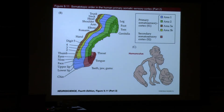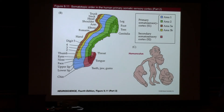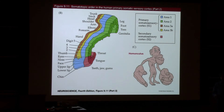If you move electrodes around this part of the brain systematically, you find they represent different parts of the body. For example, a neuron here may represent your shoulder, while a neuron there may be responsive to touch of one of your fingers. The receptive field establishes the relationship between parts of the brain and the outside world. This map is called the homunculus.